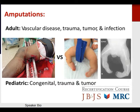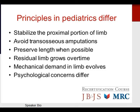Amputations are an important aspect of orthopedic care. Adult amputations are often needed secondary to vascular disease, trauma, tumors, or infection. Pediatric amputations are often necessary due to congenital deformities, trauma, and tumors. In pediatrics, it is important to stabilize the proximal portion of the limb, avoid transosseous amputations when possible, preserve length, understand that the residual limb can grow over time, and account for evolving mechanical demand. There are also different psychological concerns compared to the adult population.